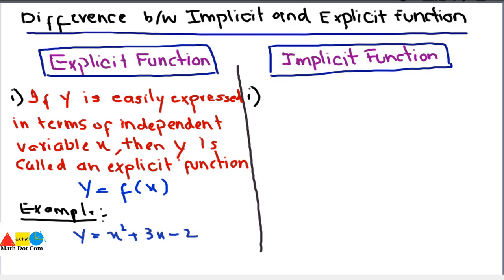This is an example of explicit function because x and y are separated from each other and y can easily be expressed in terms of x. There is no complex function in it or complexity in the given equation, so we can say this is an explicit function.